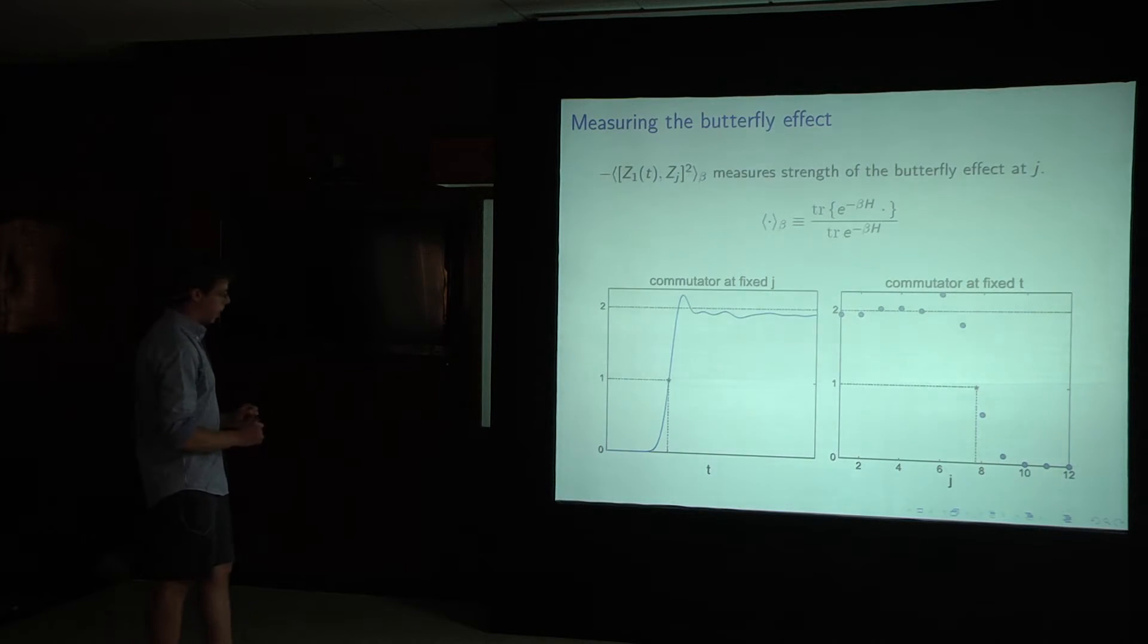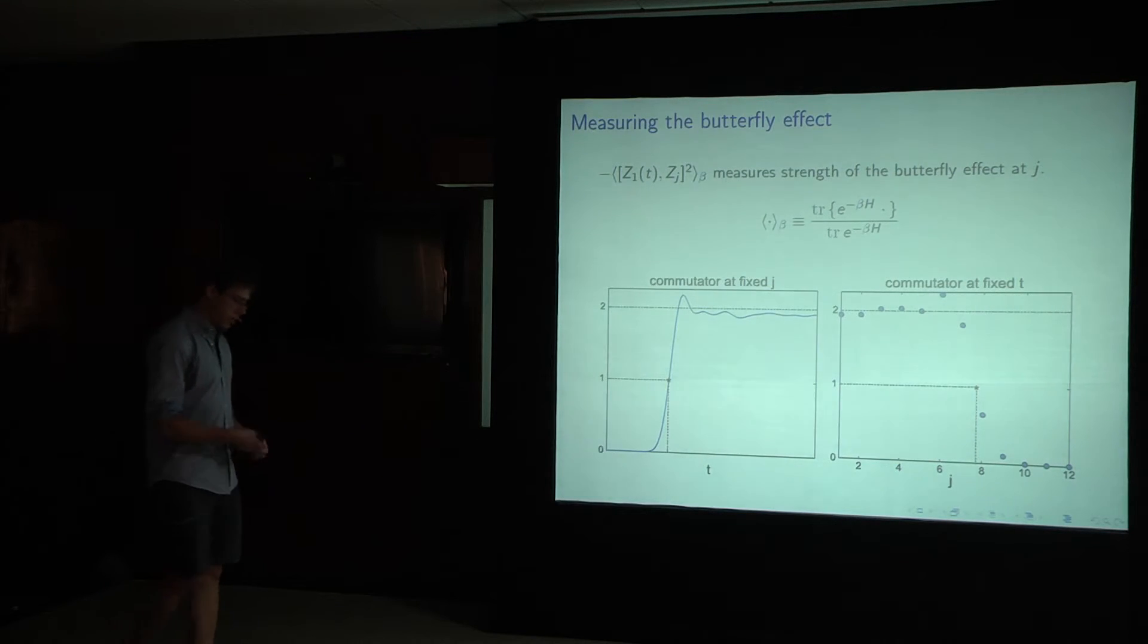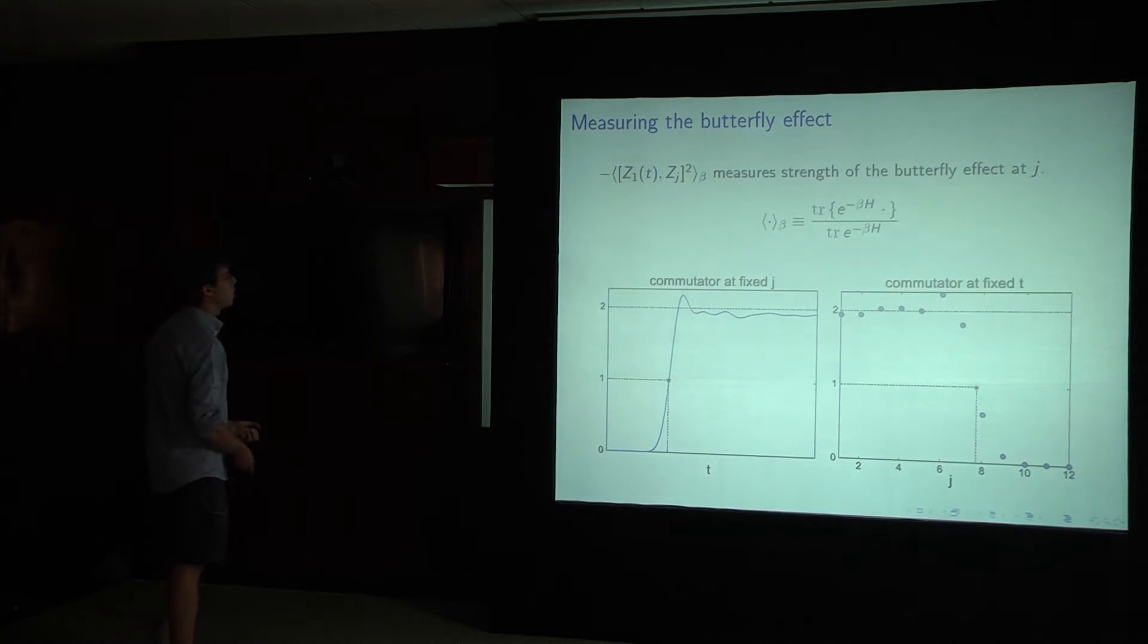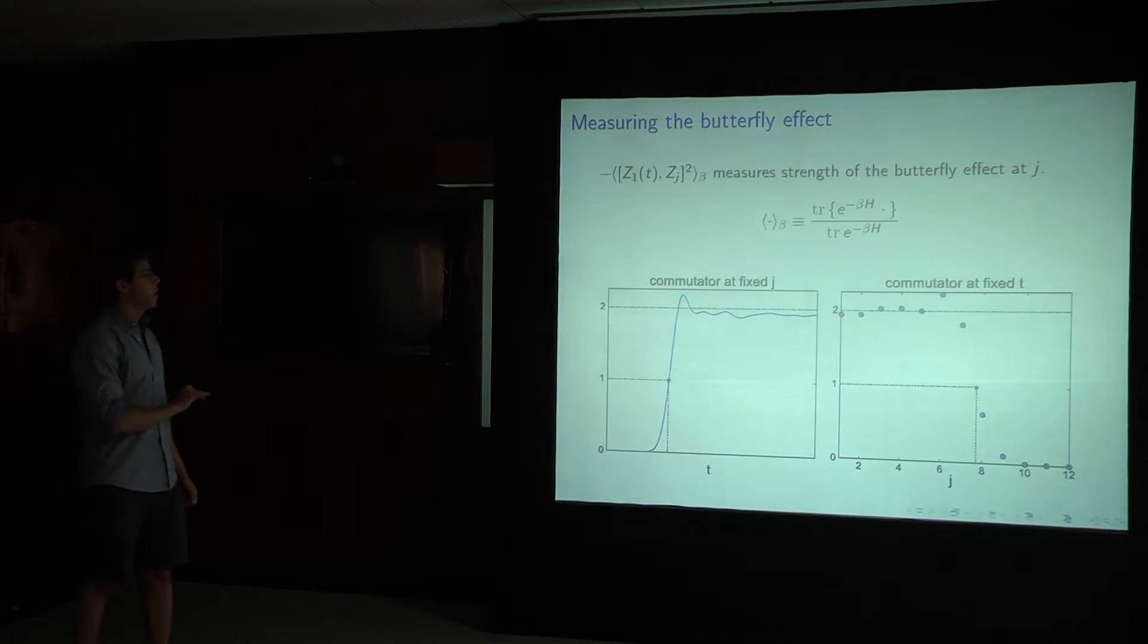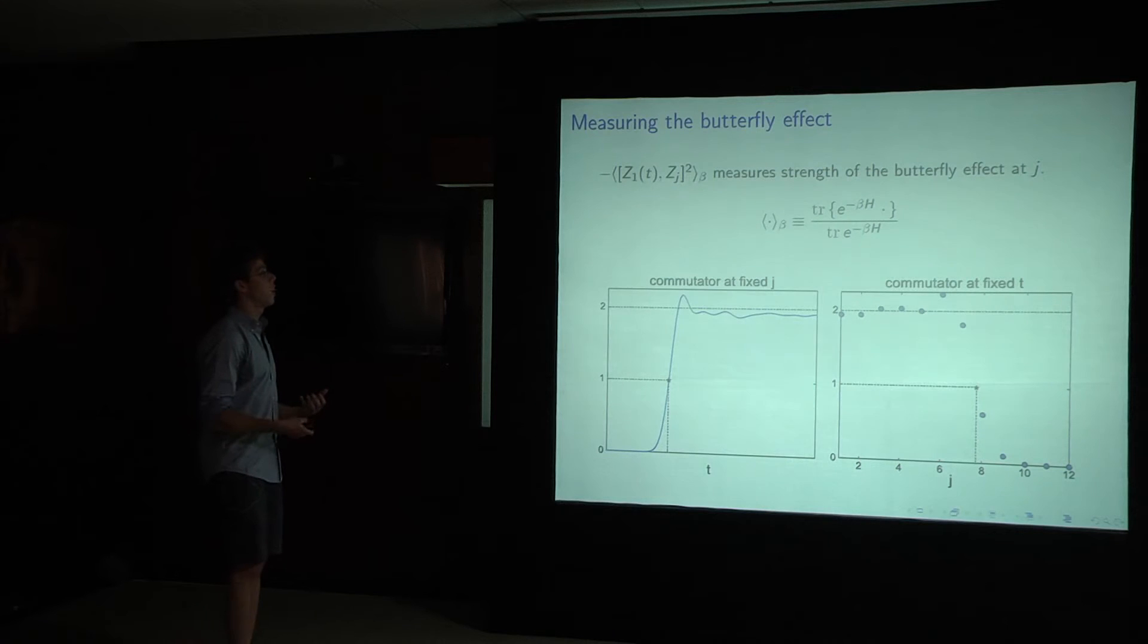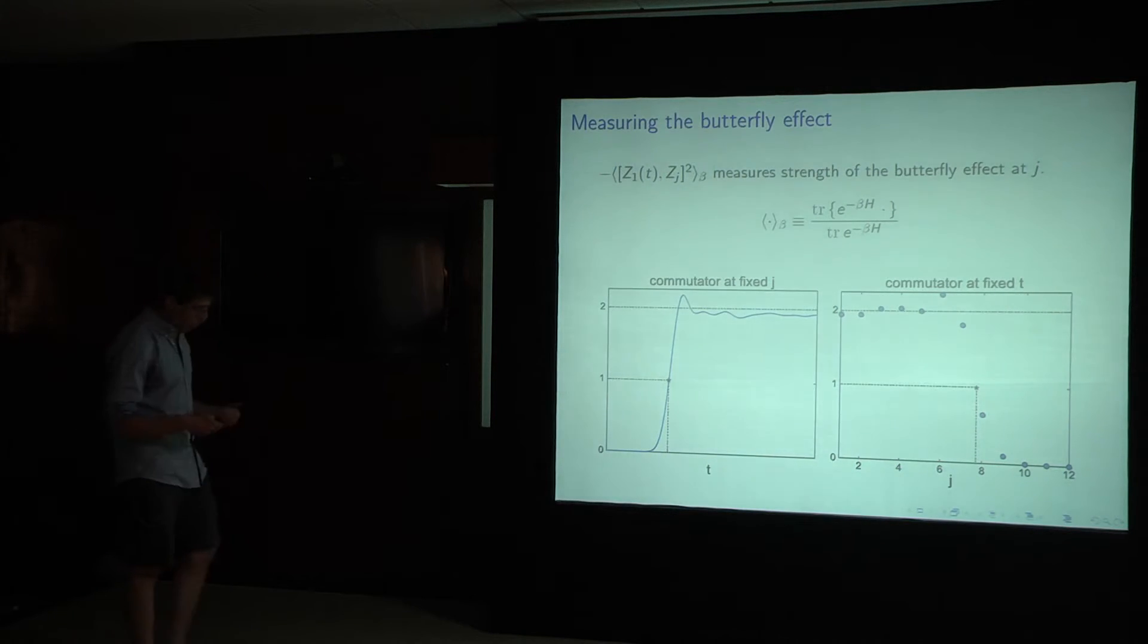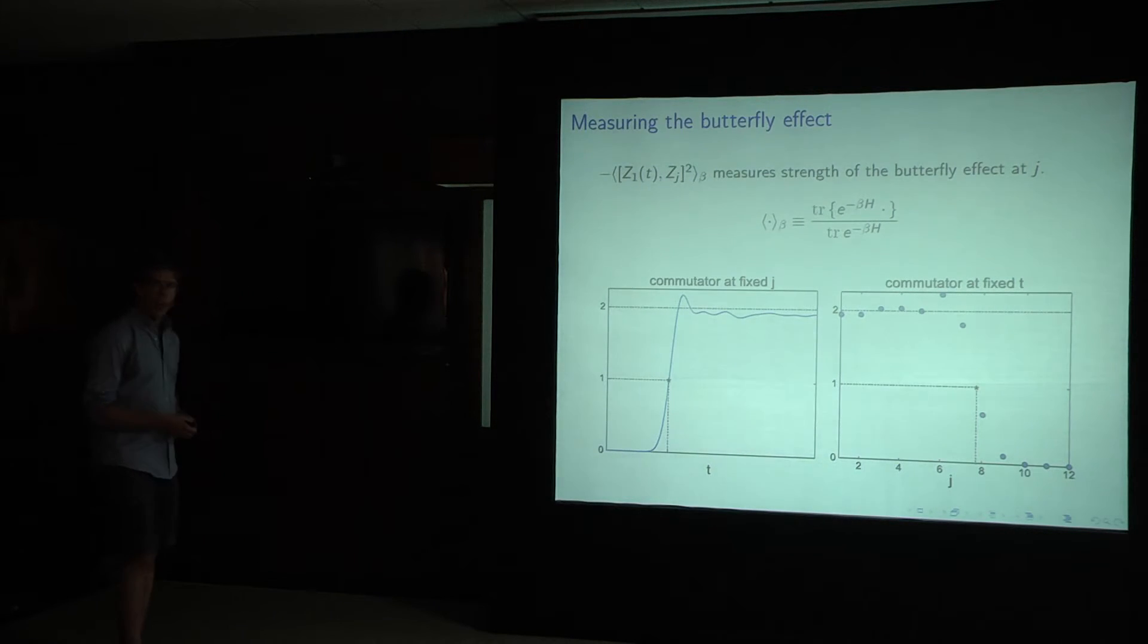And so consider this commutator. I take my precursor, z1 of t, and then I take a second simple local operator, in this case I've chosen z at site j, and I take their commutator, I square it in order to avoid phase cancellations, I take the minus sign to make sure it's positive, and then I average it over the thermal ensemble, which is the state that I'll be interested in for the rest of the talk. This object is a measure of the strength of the butterfly effect at site j.